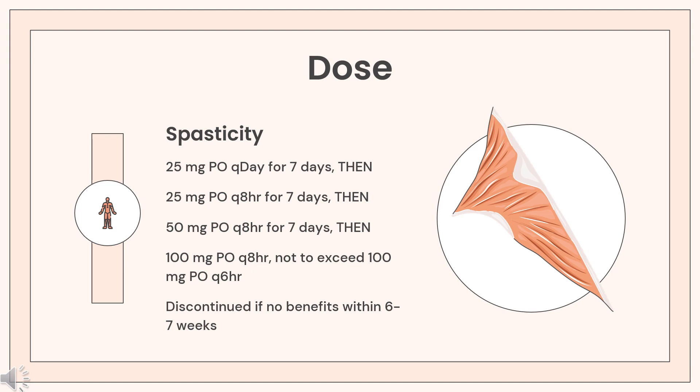Malignant hyperthermia prevention — not recommended by MHAUS. Option: 1 to 3 days before surgery, 4 to 8 mg/kg/day PO divided every 6 hours. Alternatively, 75 minutes before anesthesia, 2.5 mg per kg IV once over 60 minutes; administer additional doses PRN.